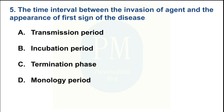The time interval between the invasion of an agent and the appearance of the first sign of the disease. Option A: transmission period. Option B: incubation period. Option C: termination phase. Option D: pathology period. The correct option is Option B — incubation period.